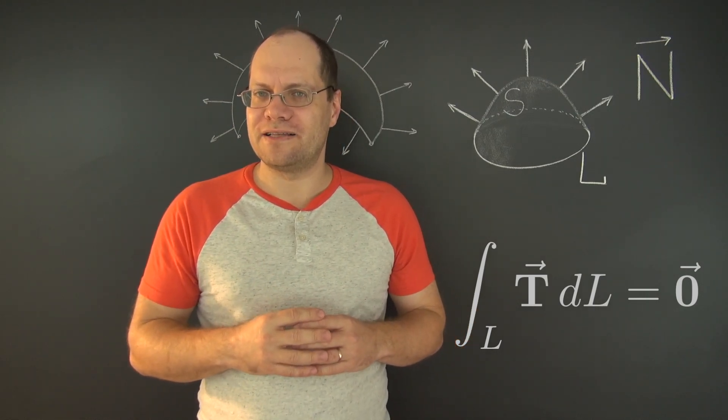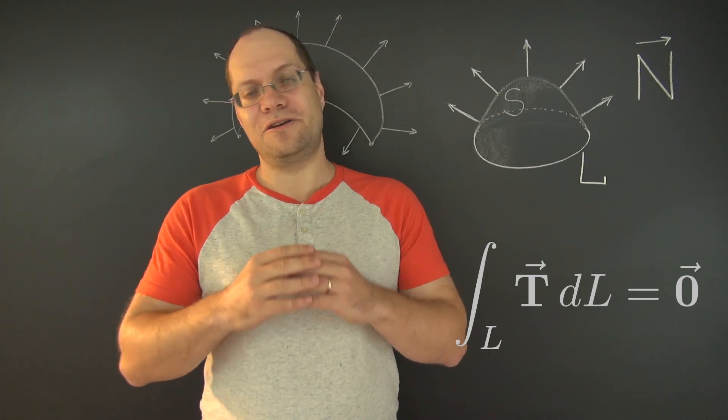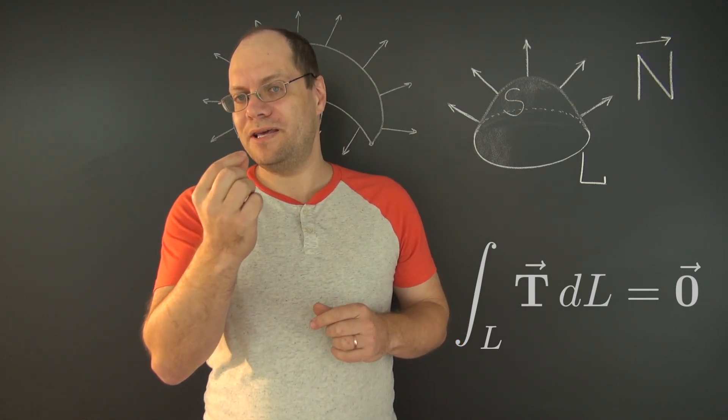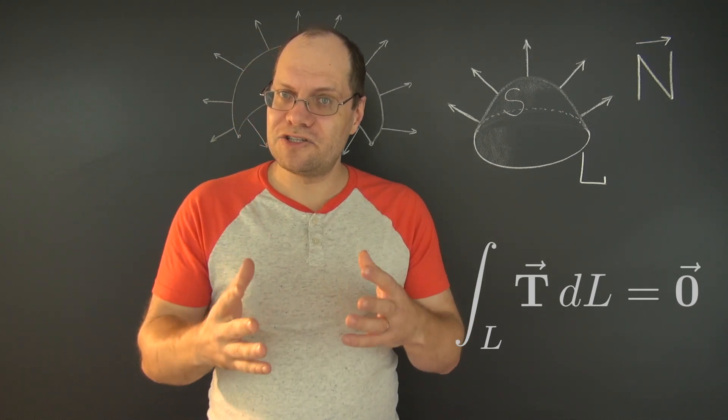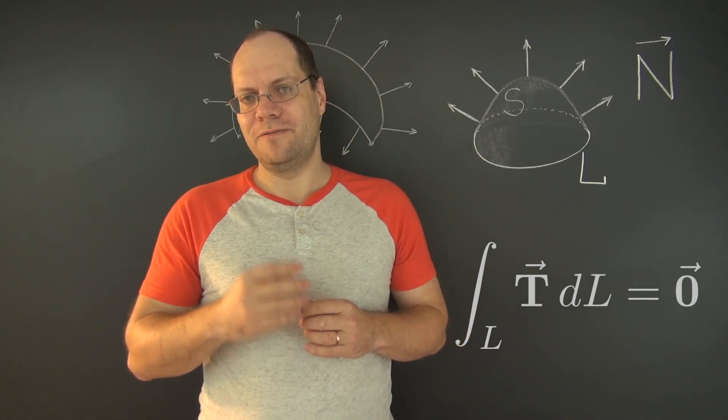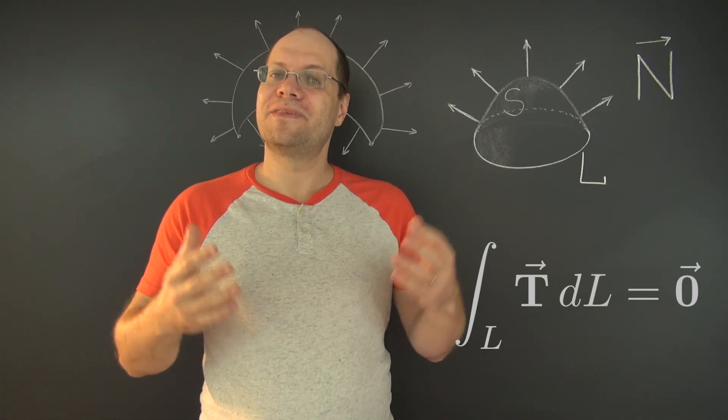This makes perfect intuitive sense, because the unit tangent corresponds to the velocity of a material particle moving around the boundary with unit speed. And so the integral of the unit tangent corresponds to the total displacement of such a particle as it moves around the closed loop, which, of course, is zero.